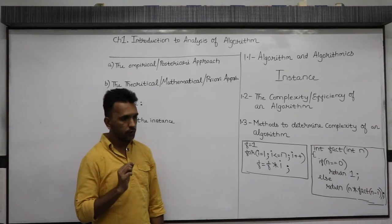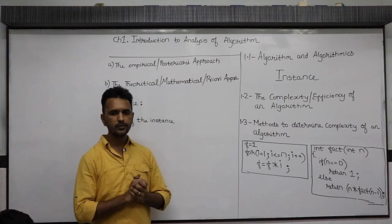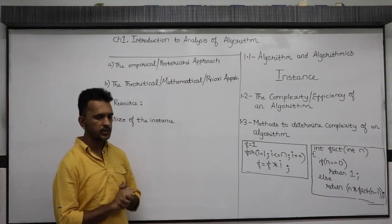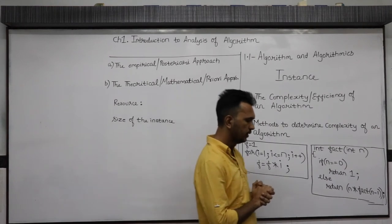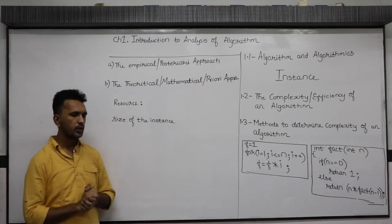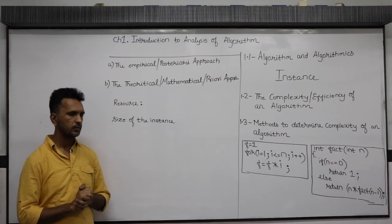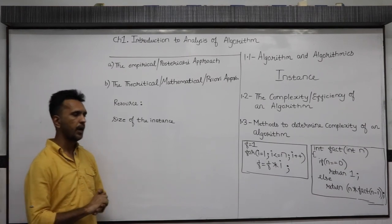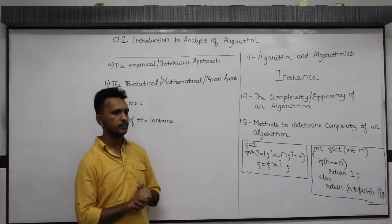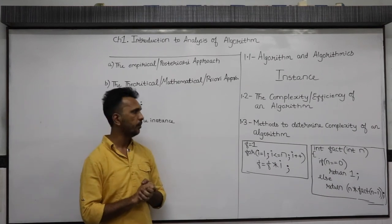Analysing an algorithm means finding its complexity — in bracket: time and space. Now, in topic 1.3, we study the methods and techniques to determine the complexity of the algorithm.